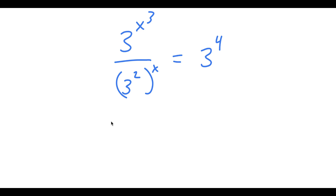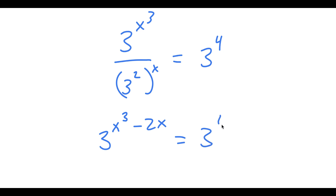Now, this is the same thing as 3 to the power of x³ minus 2x, is equal to 3 to the power of 4, because 3 to the power of 2 to the power of x equals 3 to the power of 2x.